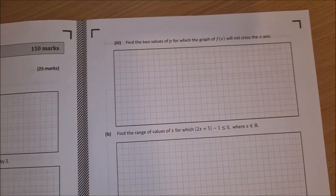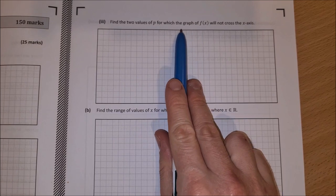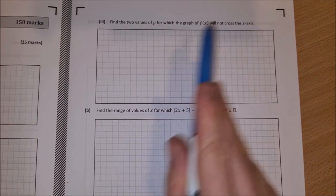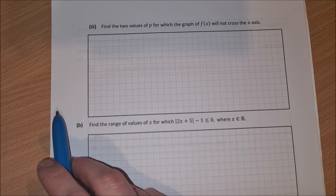On to the next part, part 3. Find the two values of p for which the graph of f(x) will not cross the x-axis. So for this we can use our discriminants.